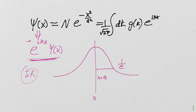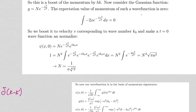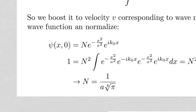By multiplying by e^{ik₀x}, we've boosted our wave function so it represents a moving Gaussian — a Gaussian marching in one direction with momentum ℏk₀. So we adjust our wave function to have an initial Gaussian structure with an initial momentum k₀: ψ(x) = N e^{-x²/a²} e^{ik₀x}.